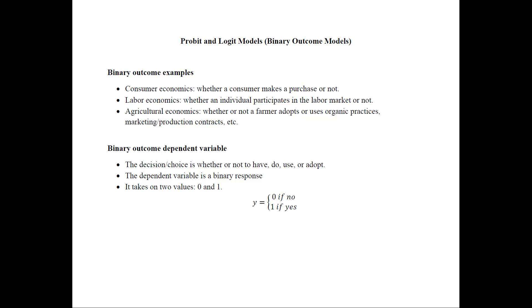So, what are the probit and logit models? These are binary outcome models. Here are a few examples from consumer economics: whether a consumer makes a purchase or not. From labor economics, whether an individual participates in the labor market or not. And from agricultural economics, whether or not a farmer adopts organic practices or marketing or production contracts. In all of these examples, the dependent variable has two choices — you either do something or don't do something. There are just two choices.